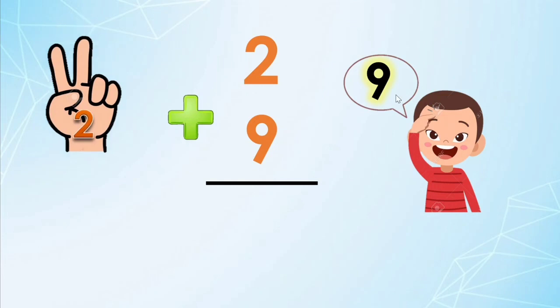Let us count on. 9, 10, 11. So 2 plus 9 equals 11.